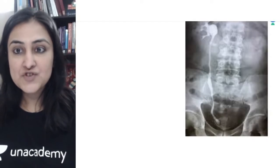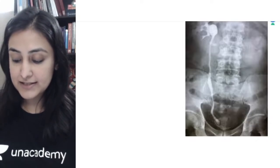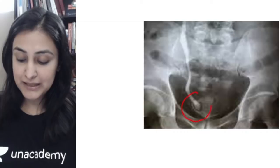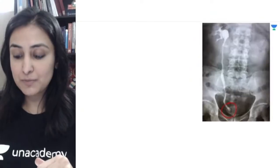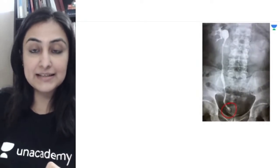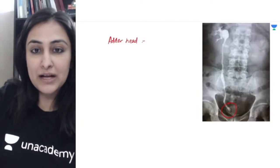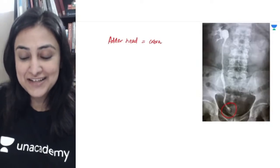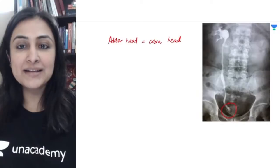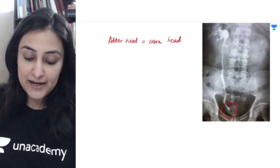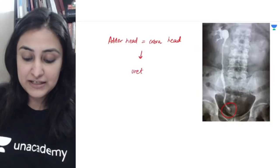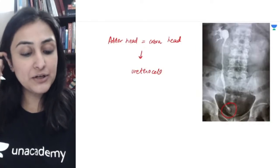Here we can see the abdominal x-ray — you can see the kidney on the right side which is excreting the contrast. At the distal-most end, your focus and attention should be here. I am seeing a cystic dilatation — there's a dilatation of the distal-most part of the ureter. This is the adder head appearance, also called cobra head appearance.